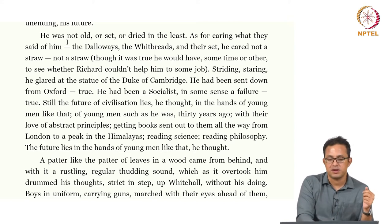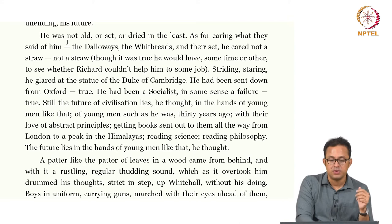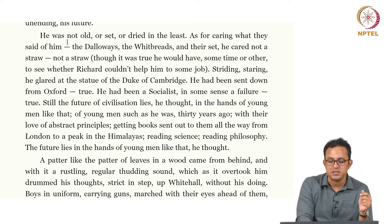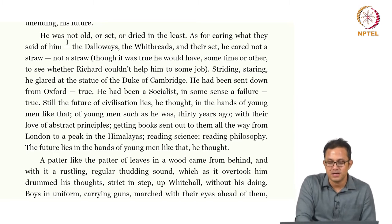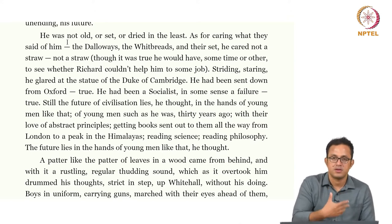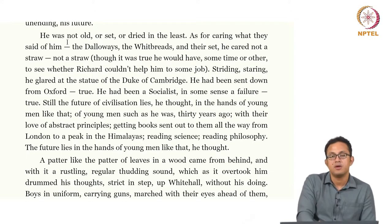Here is the passage: 'He had been a socialist — in some sense a failure — true, still, the future of civilization lies, he thought, in the hands of young men like that.' He is looking at young men — presumably boy scouts — marching down the streets of London. 'The future of civilization lies in the hands of young men such as he was thirty years ago, with a love of abstract principles, getting books sent out to them all the way from London to a peak in the Himalayas, reading science, reading philosophy.' This reveals a very masculinist view of civilization as something that can only be controlled by young men.